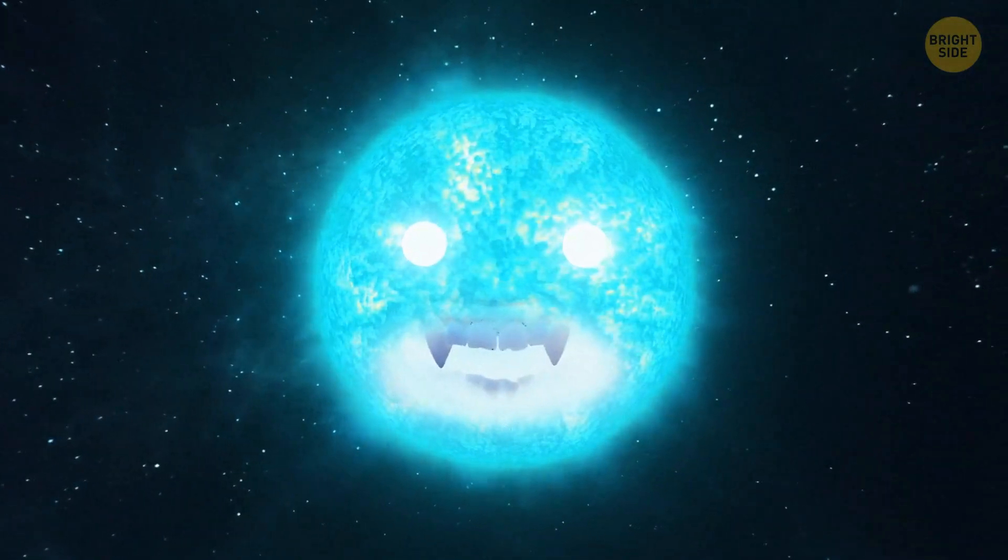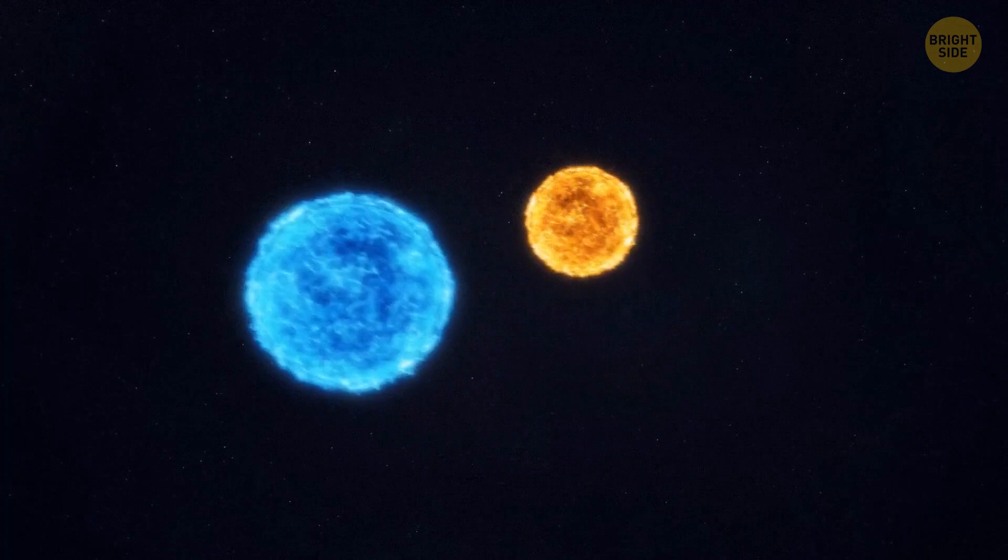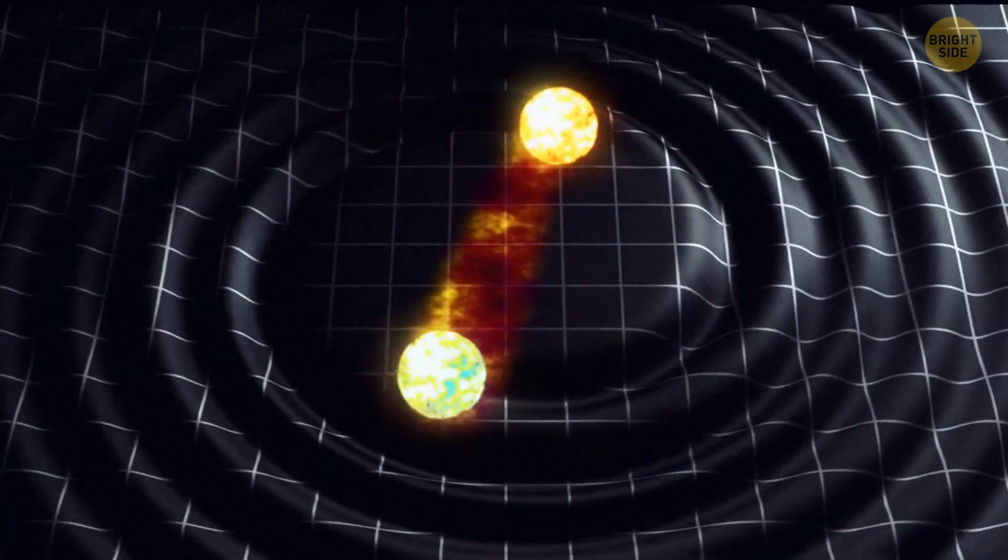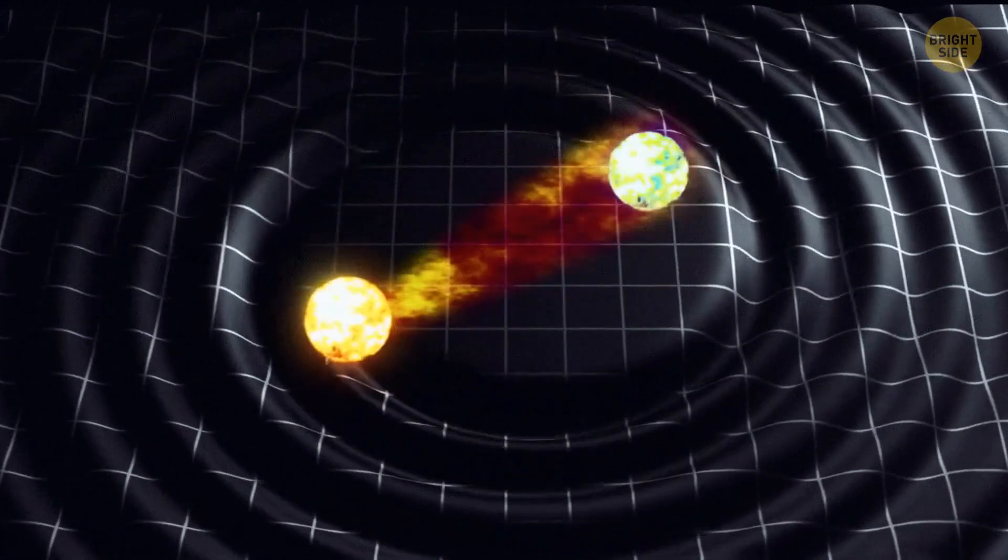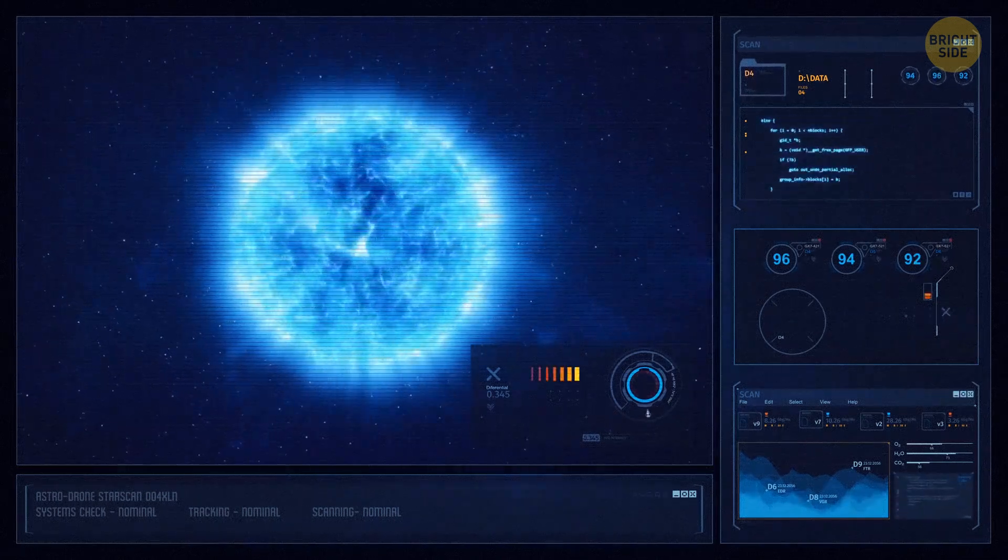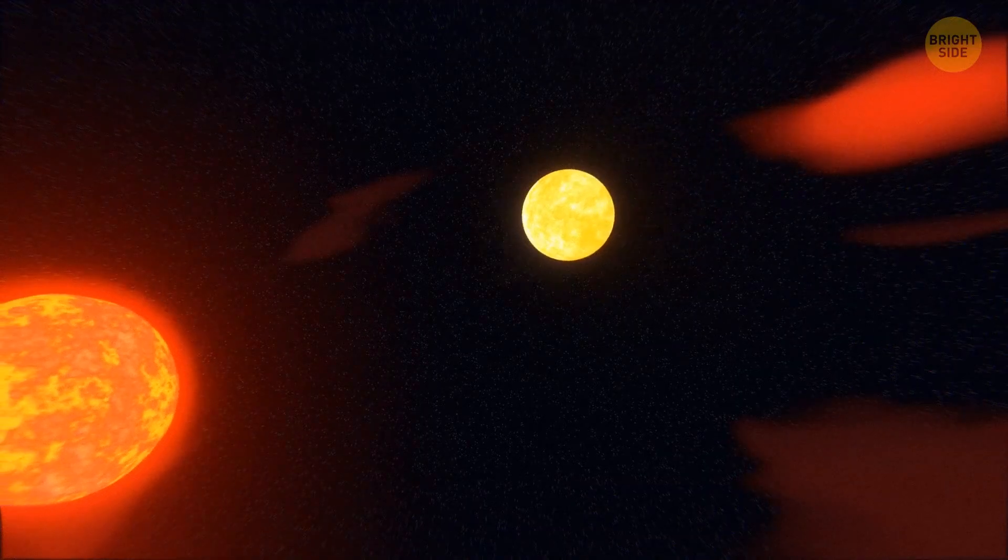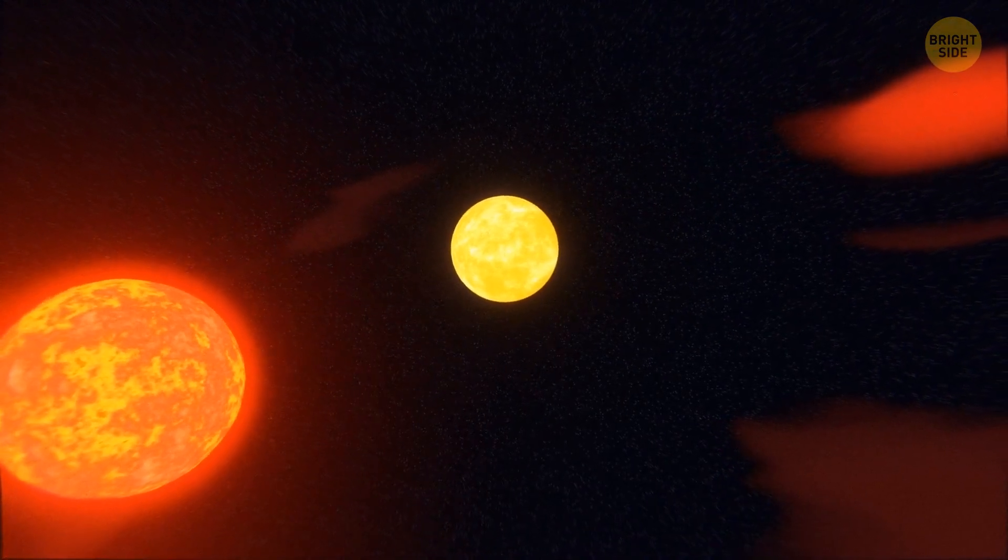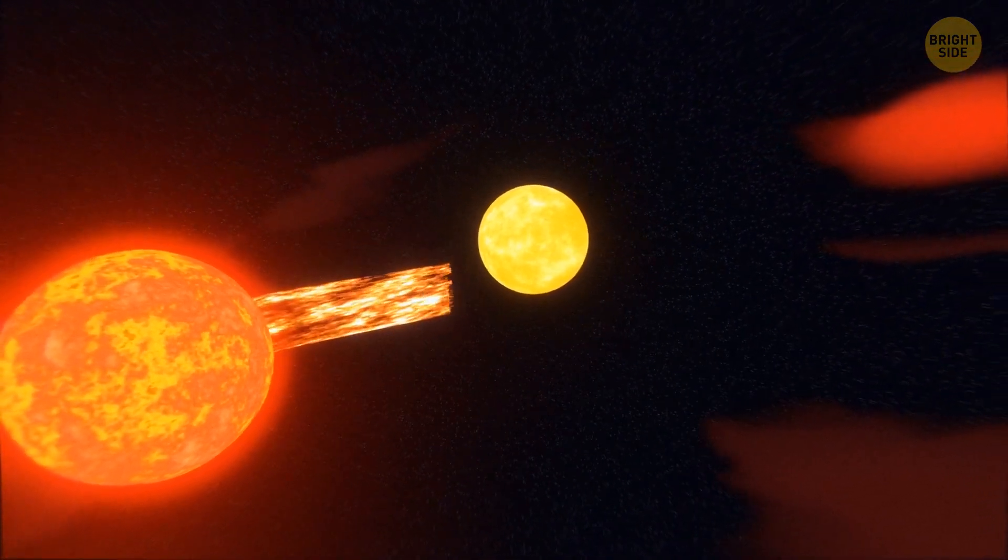Vampire stars are a real thing. They're part of a binary star, and they can literally drain the life out of the other star in the system. They do it to keep burning for a longer time. It works like this: a smaller star with a lower mass steals its sibling's hydrogen fuel to increase its own mass.